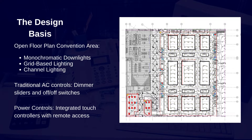This study covered an open floor plan convention area that required monochromatic downlights, grid-based lighting, and channel RGBW lighting. The traditional AC-based design provided the lights with basic dimming and on-off switches. The POE design, on the other hand, allowed for the integration of touchscreen controllers featuring customized group controls, high-fidelity dimming, scene creation, scheduling, automation, and remote management. So let's put the cost comparison up side-by-side so you can see the results.